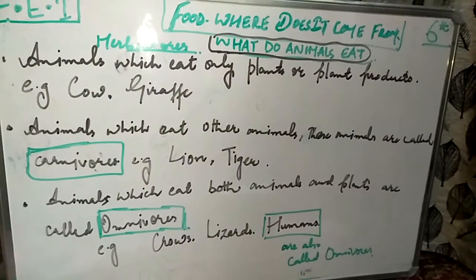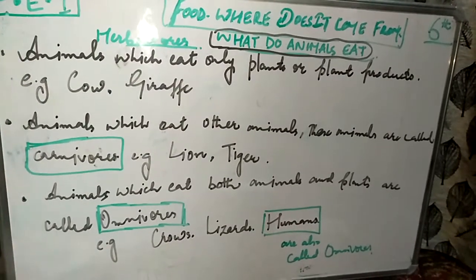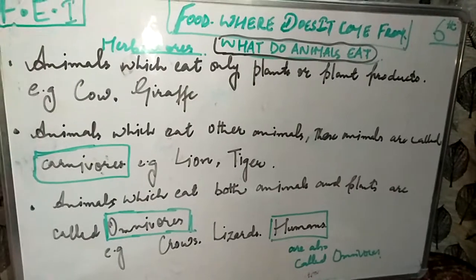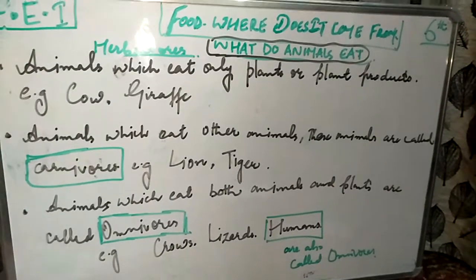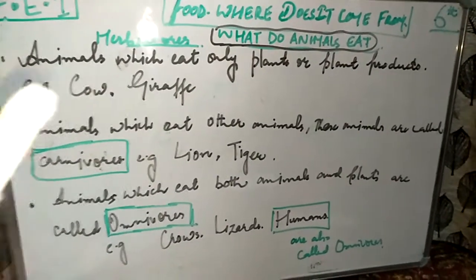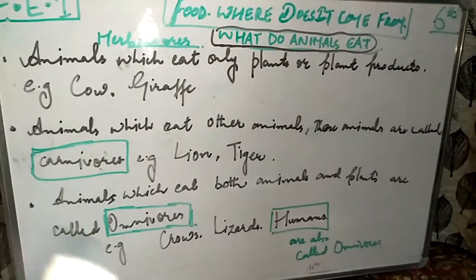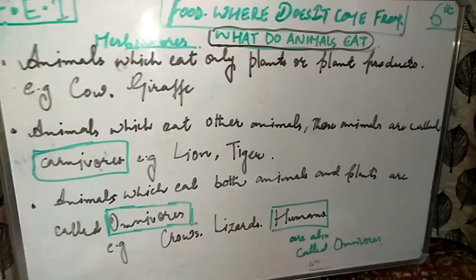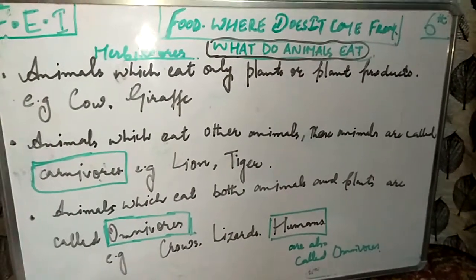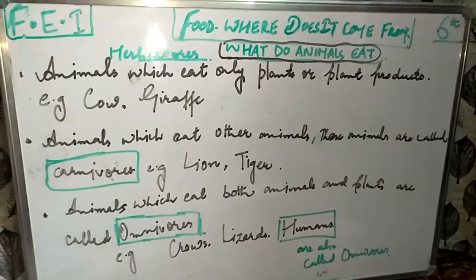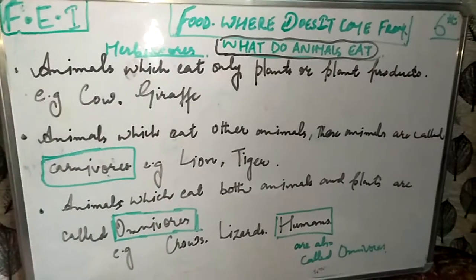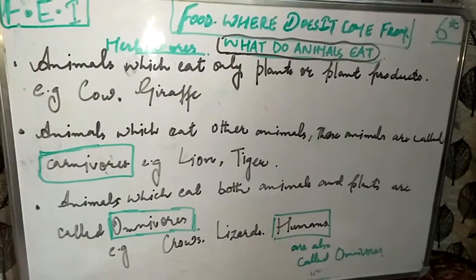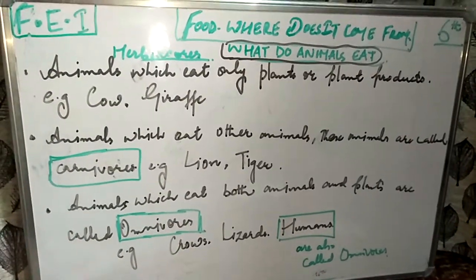So this is why we studied the examples of animals and how they are categorized. Animals are categorized as herbivores, carnivores, and omnivores. This was our topic today. If you have any issues or problems, you can check the textbook.